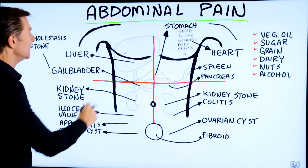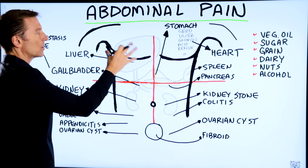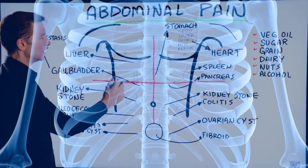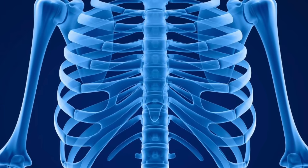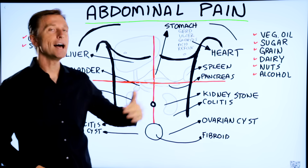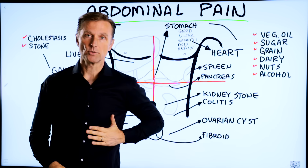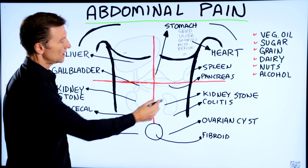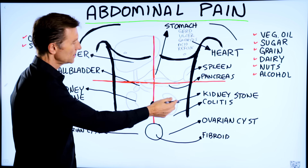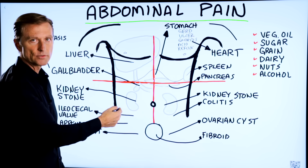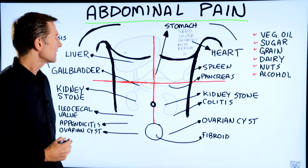So we have the right upper quadrant here, and you have the rib cage right here. Over here we have the left upper quadrant, then the left lower quadrant and the right lower quadrant.